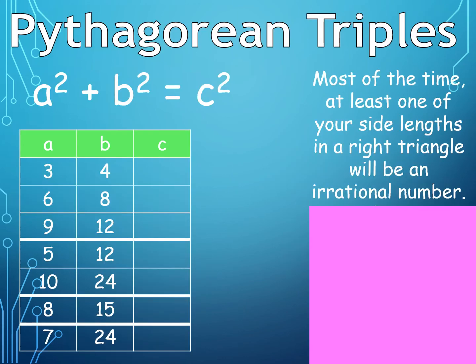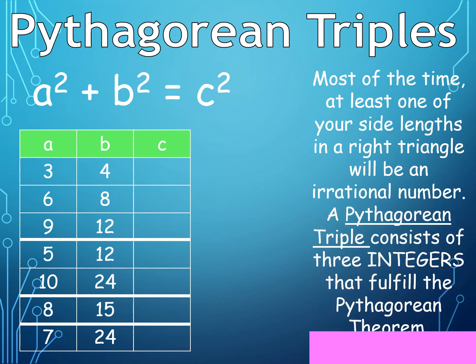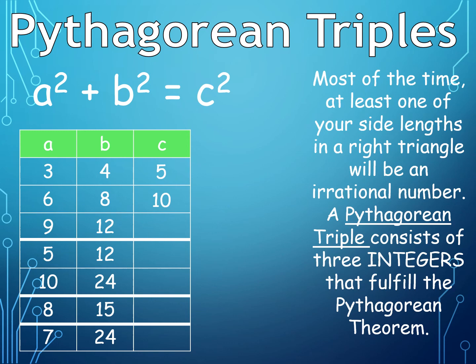Now let's move on to Pythagorean triples. Most of the time, at least one of the side lengths in a right triangle will be an irrational number. A Pythagorean triple consists of 3 integers that fulfill the Pythagorean Theorem. Some examples: A=3, B=4, C=5; A=6, B=8, C=10; A=9, B=12, C=15; A=5, B=12, C=13; A=10, B=24, C=26; A=8, B=15, C=17; A=7, B=24, C=25.